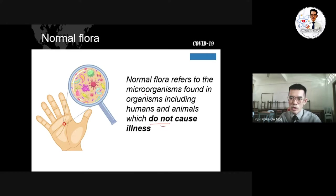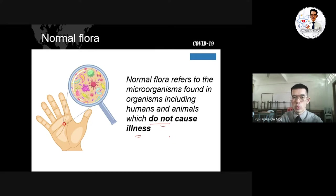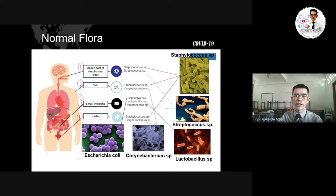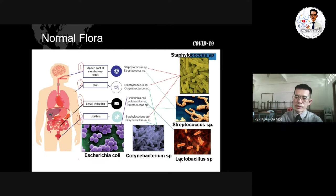Let us go through the definition of normal flora. Normal flora refers to microorganisms found in organisms, including humans and animals, which do not cause illness. In total, there are five common types of normal flora you can find in your body: Staphylococcus species, Streptococcus species, Lactobacillus species, Corynebacterium species, and Escherichia coli.